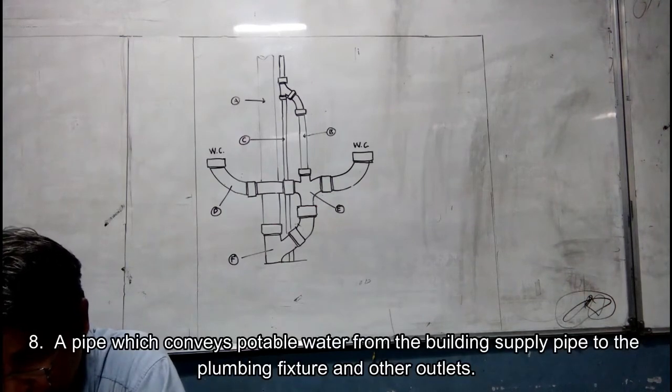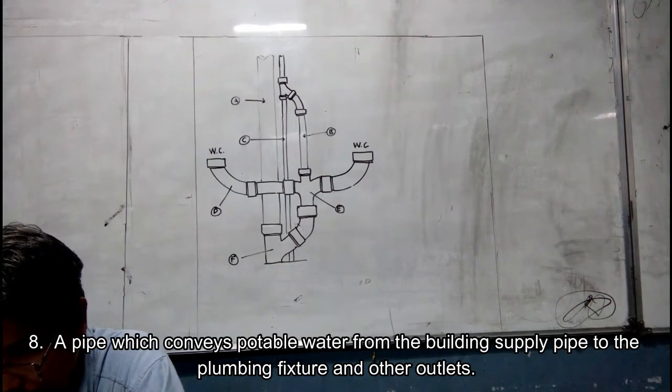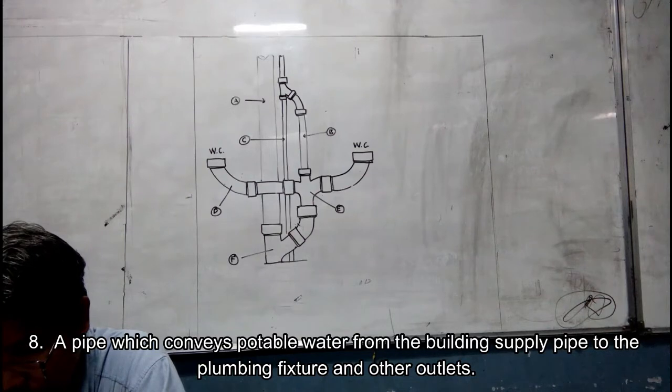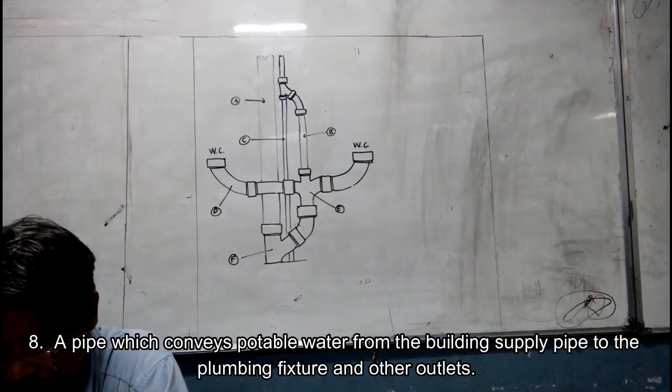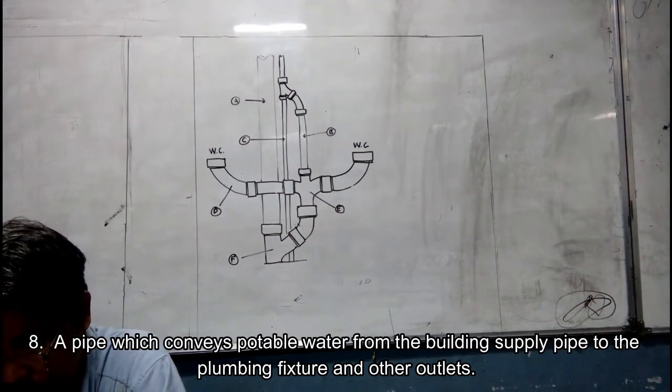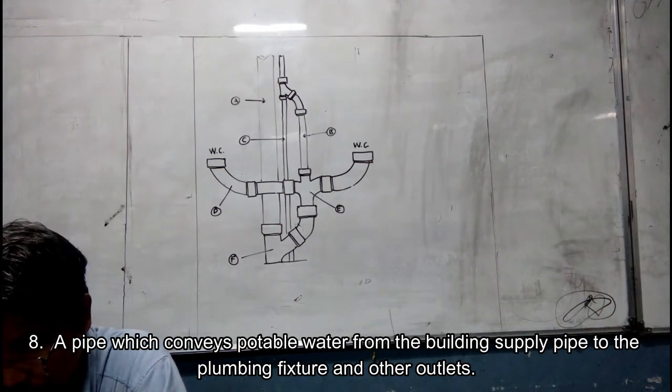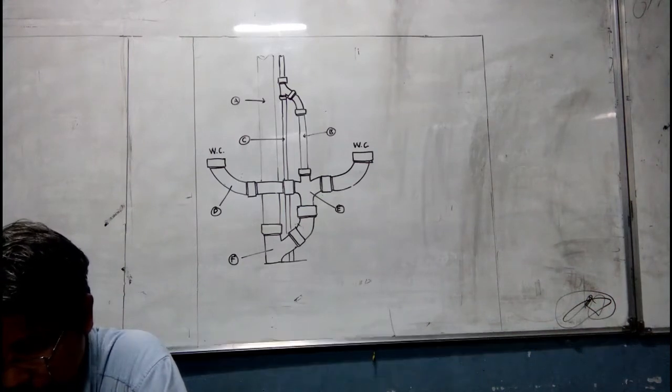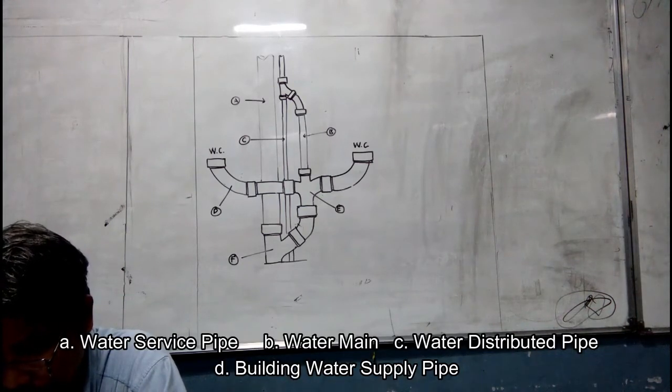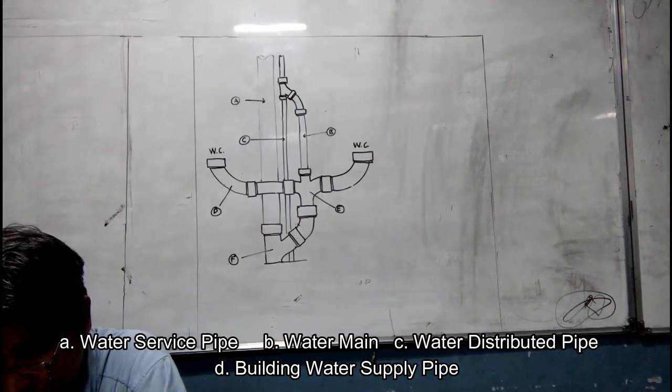Number eight. A pipe which conveys potable water from the building supply pipe to the plumbing fixture and other outlets. A. water service pipe, B. water main, C. water distributing pipe, D. building water supply pipe.